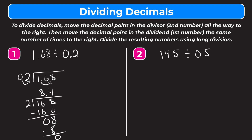Let's try number two. We have fourteen and five-tenths divided by five-tenths. Let's rewrite this as a long division problem. We have fourteen and five-tenths on the inside and zero point five on the outside. In order to get a whole number as the divisor we have to move the decimal point over one. That means in the dividend we also have to move the decimal point over one as well. So we have five outside of our bar and one hundred and forty-five underneath.